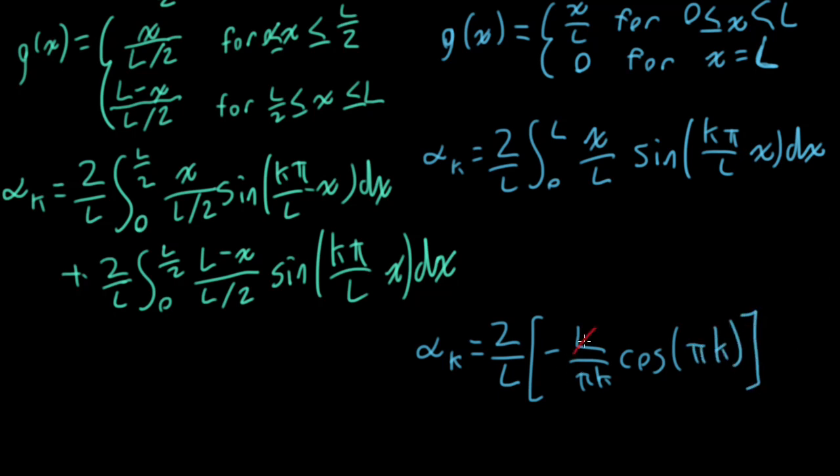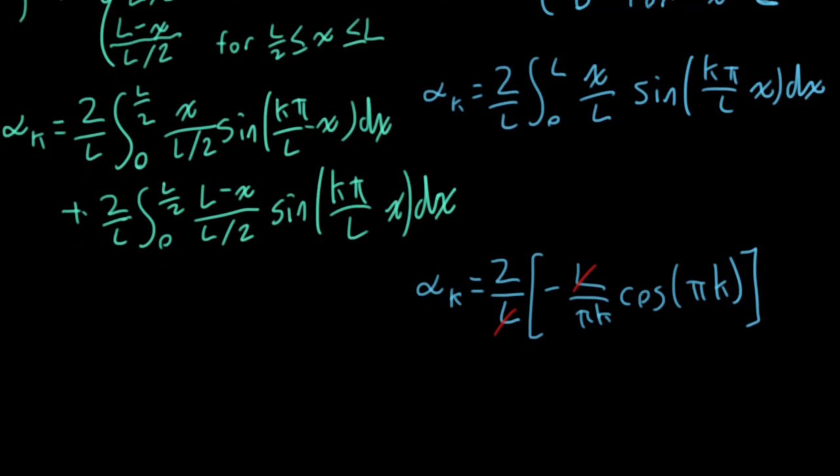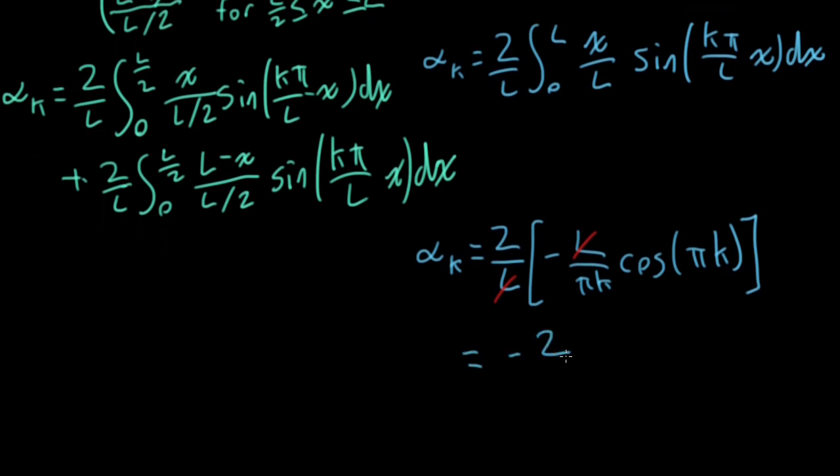Let's see, so the l's will cancel, and I'm left with minus 2 over pi k. And notice something about this cosine here. So I'll have cosine 0, cosine pi, cosine 2 pi, cosine 3 pi, and so on. So this is basically just flipping between 1 and minus 1. So I can write this as minus 1 to the power of k. So the sign is flipping back and forth. But the magnitude is decreasing on the order of 1 over k.